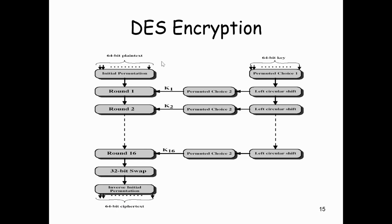Inside the DES encryption algorithm, the 64-bit plaintext is converted into 64-bit ciphertext. This 64-bit plaintext is first given to the Initial Permutation function. The 64-bit key is given to Permutation Choice. The Initial Permutation gives 64 bits output, and there are 16 rounds in DES — round one, round two, and so on until round 16.